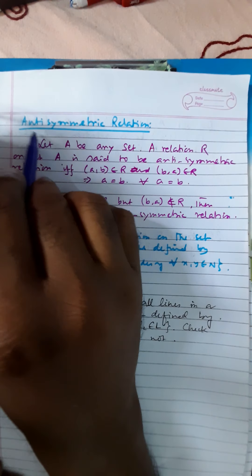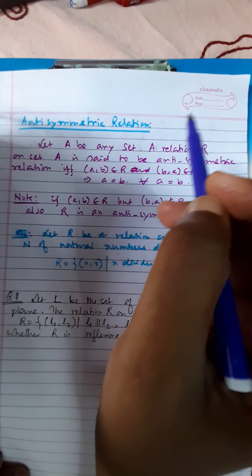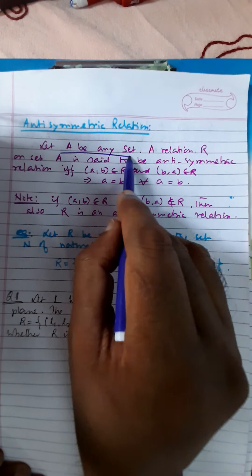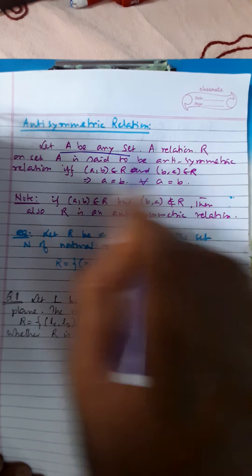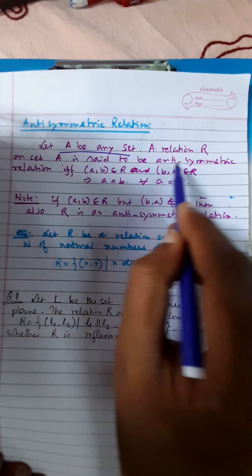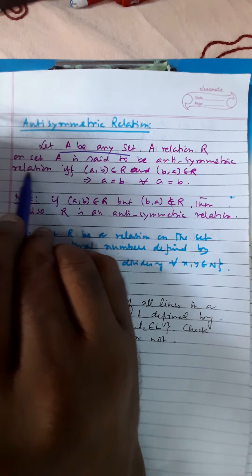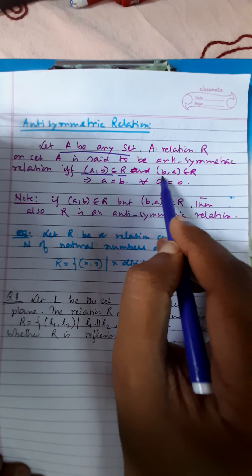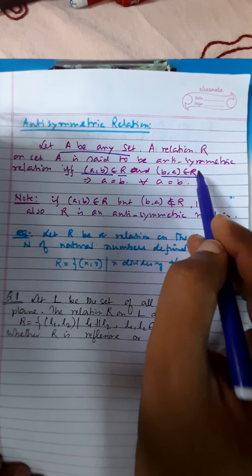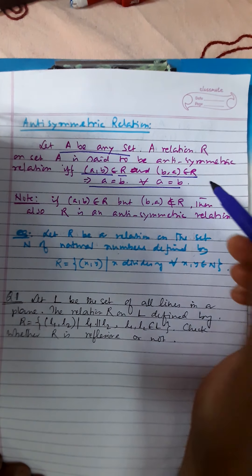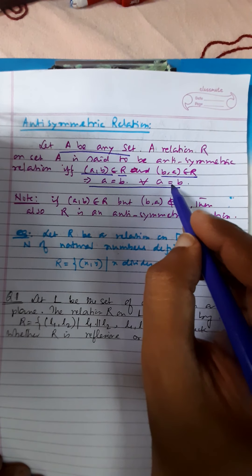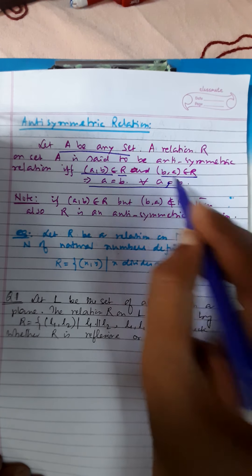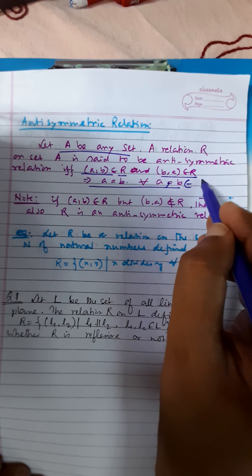First, we have to know about anti-symmetric relations. What is anti-symmetric? Let A be any set. A relation R on a set A is said to be an anti-symmetric relation if and only if: A comma B belongs to R and B comma A belongs to R implies that A is equal to B, for all A comma B belonging to A.